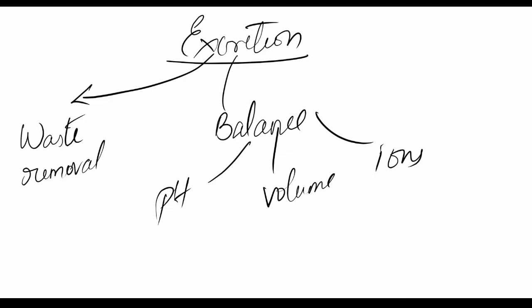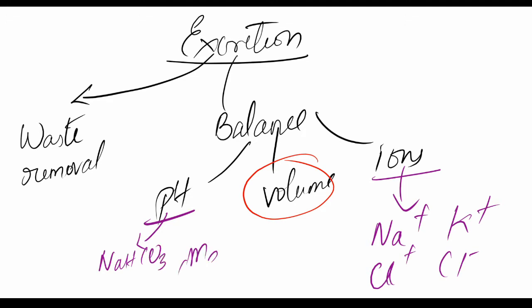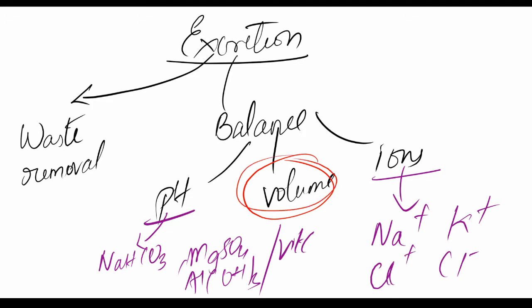The drugs which we are using on the renal system mainly act on volume maintenance, because for ionic balance we can directly supply ions like sodium, potassium, calcium, or chlorine by oral or parenteral route. For maintenance of pH, we have agents like sodium bicarbonate, magnesium sulfate, and aluminium hydroxide, which are called antacids. For acidity, we can use vitamin C to make the body pH more acidic. So the renal drugs mainly act on volume.